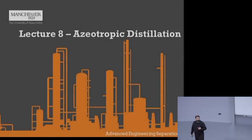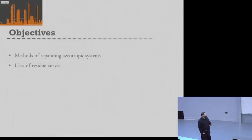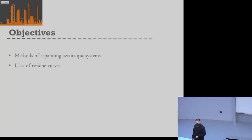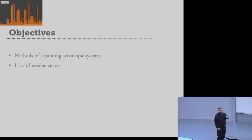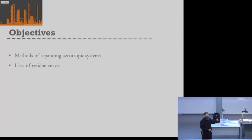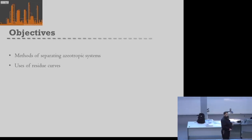Today we're going to look at more methods for separating azeotropic systems. Last lecture we looked at pressure swing, and now we're looking at other examples where pressure swing isn't an option. Remember, for pressure swing to work, the composition of the azeotrope has to change when we change the system pressure. That doesn't happen with all azeotropes, so we need other tools.